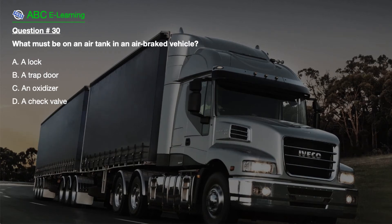Question number 30. What must be on an air tank in an air brake vehicle? A. A lock. B. A track door. C. An oxidizer. D. A check valve.